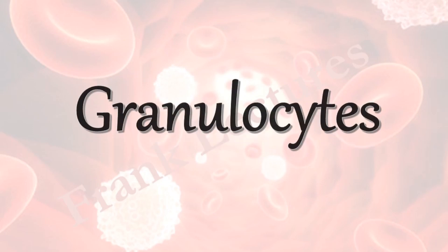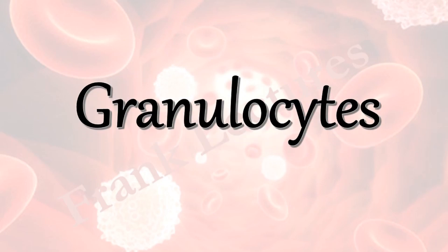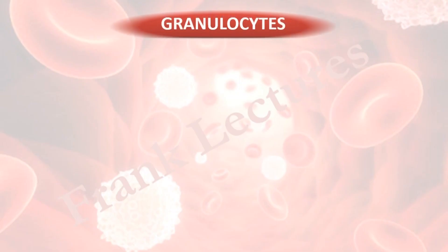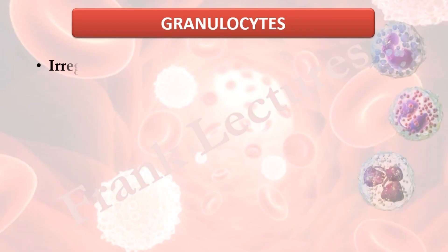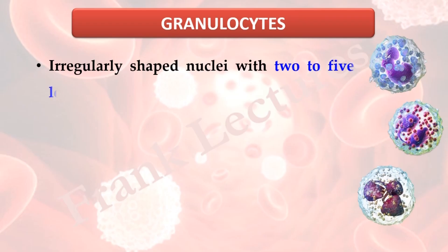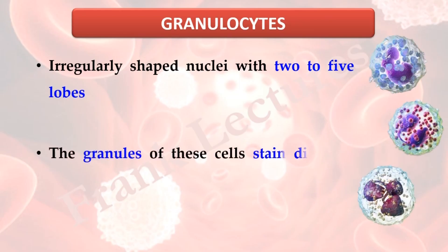In this video lecture, we will cover granulocytes. The characteristic feature of granulocytes is their nuclei. Granulocytes have irregularly shaped nuclei with two to five lobes, as clearly visible in these images. Another characteristic is that the granules of these cells stain different colors, and this depends upon the type of granulocyte and the dye which is used for staining.